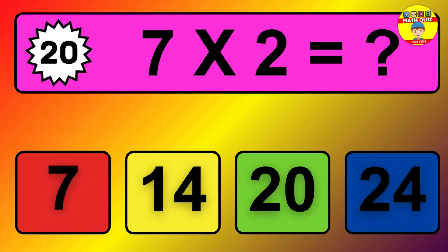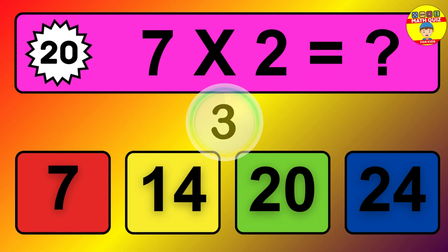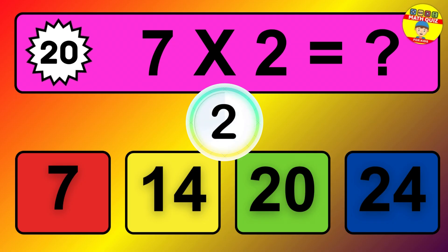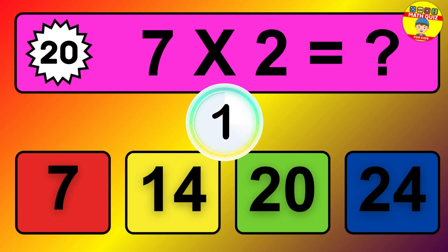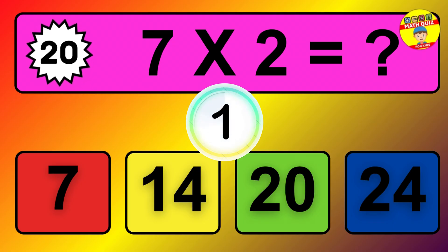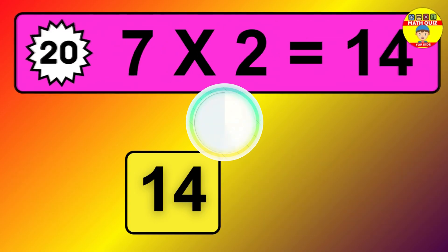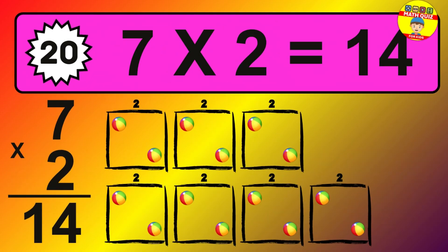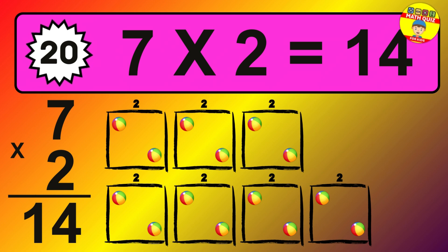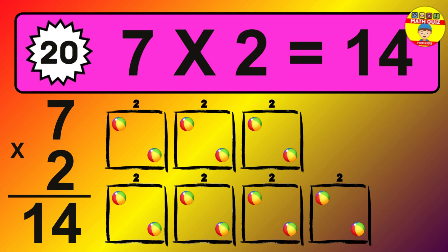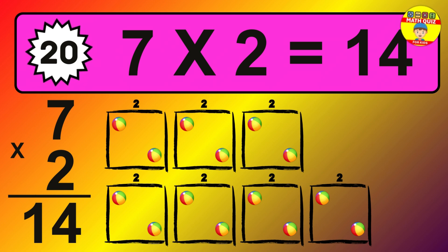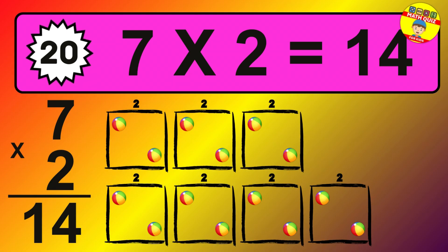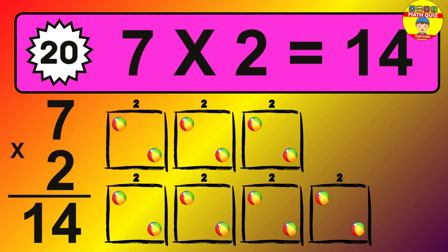Question 20. 7 times 2 equals what? The answer is 7 times 2 is 14. To calculate, we have 7 groups with 2 balls each one. So, how many balls do we have? 14 balls.